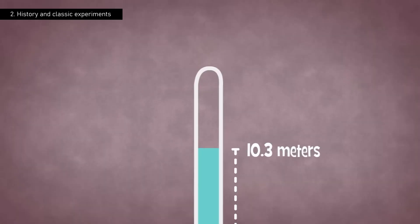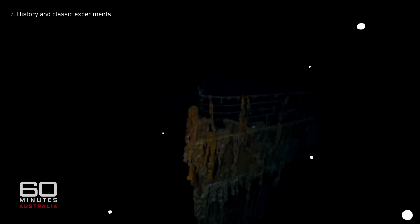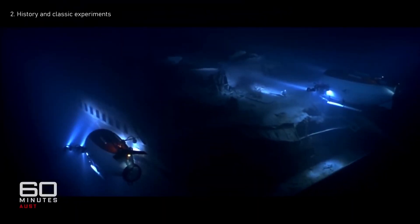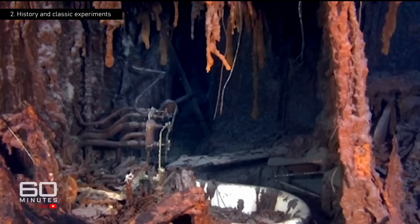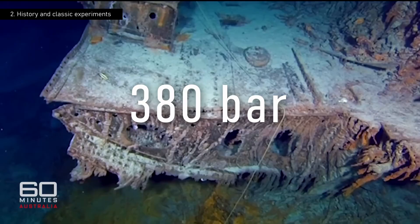Let's note that 10 meters of this water column equate to one bar. In other words, pressure increases by one bar for every 10 meters of depth. As a curious fact, the pressure at the historic location of the Titanic, about 3,800 meters below sea level, is approximately 380 bars.